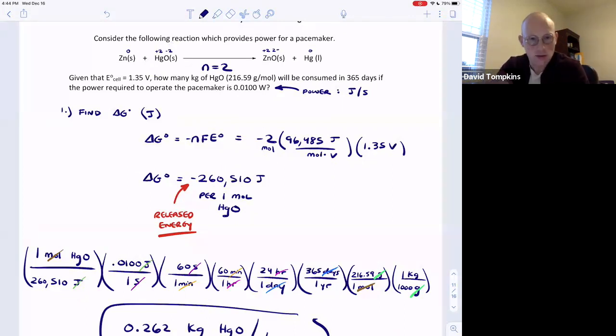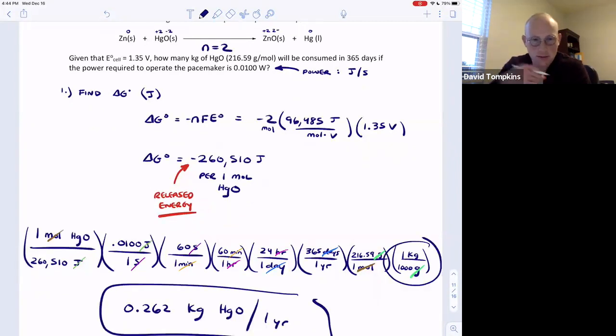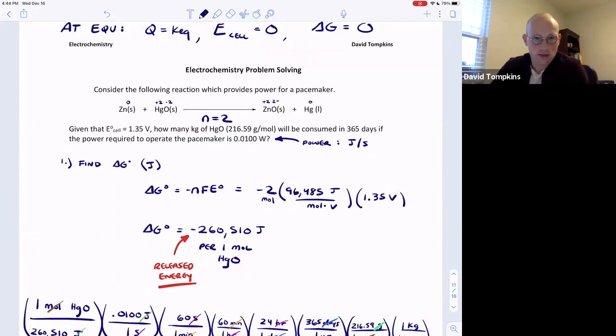After that, you can simply convert to kilograms by canceling out seconds, minutes, hours, days to give kilograms per year. For more practice with electrochemistry problem solving and dimensional analysis like this, you can visit either unit four of my analytical course guide, that's the electrochemistry section, or you can visit the electrochemistry unit in the general chem course guide, both of which are available at chemguides.com.